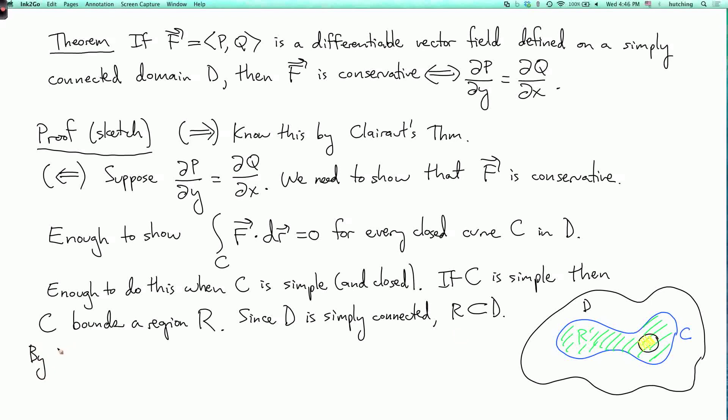So by Green's theorem, the integral over C of f·dr—which is the same as p dx plus q dy—is equal to the double integral over R of (∂q/∂x - ∂p/∂y) dA. But now look at our assumption. We assumed that ∂p/∂y equals ∂q/∂x. So this integrand is zero by assumption. If you integrate zero over any region, you're always going to get zero. So that's what we needed to show.